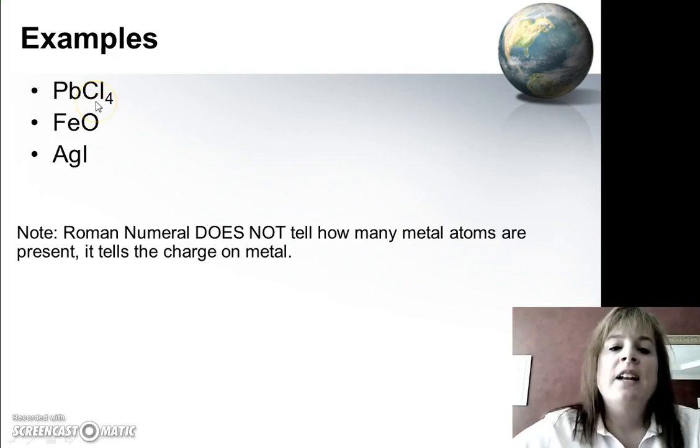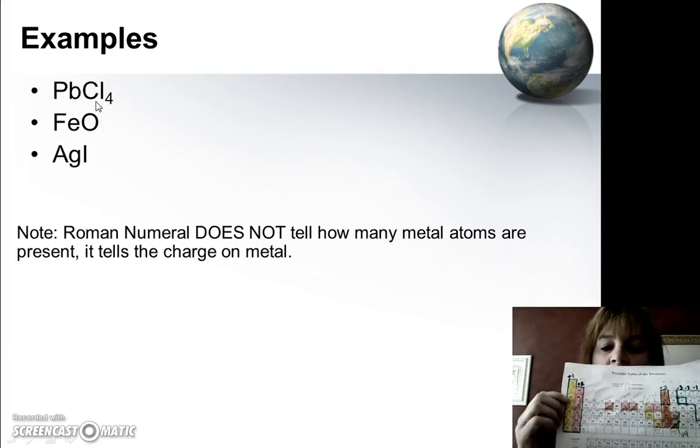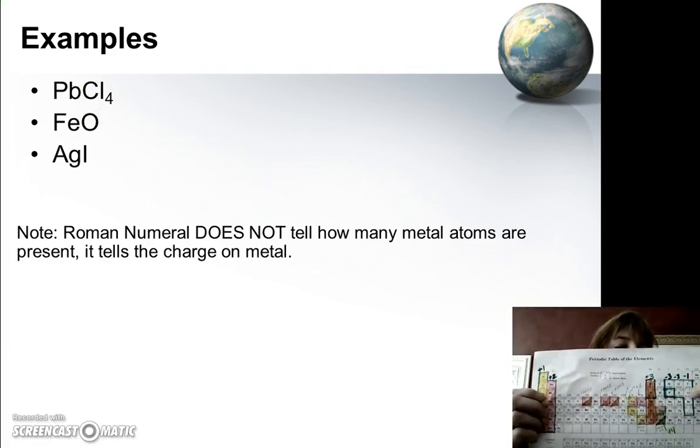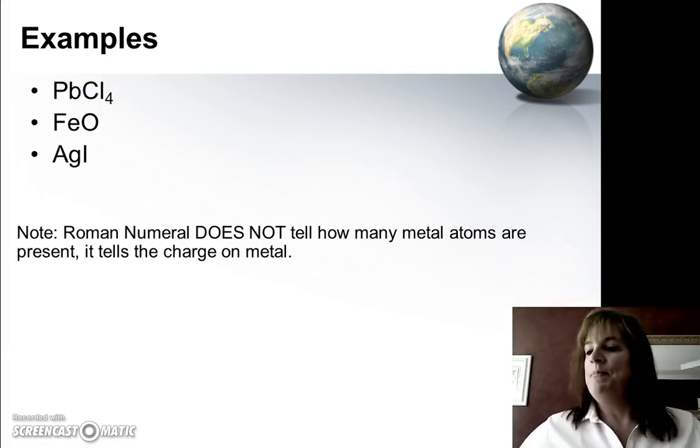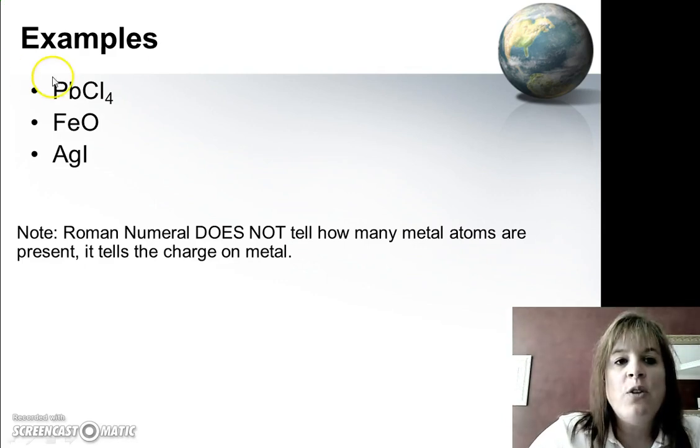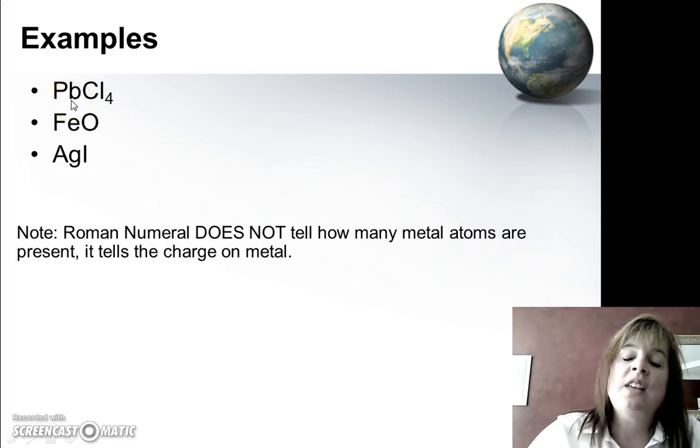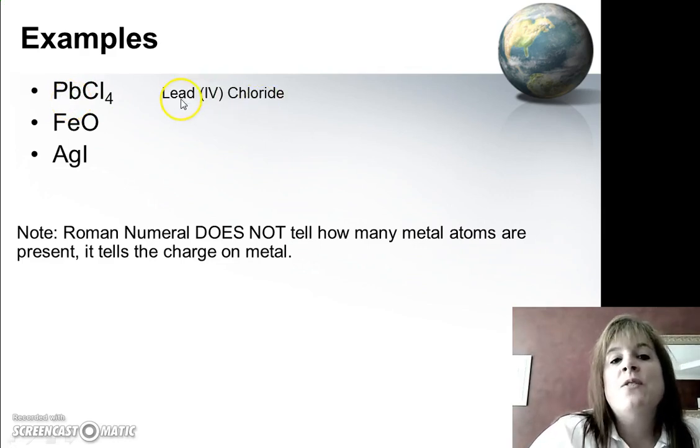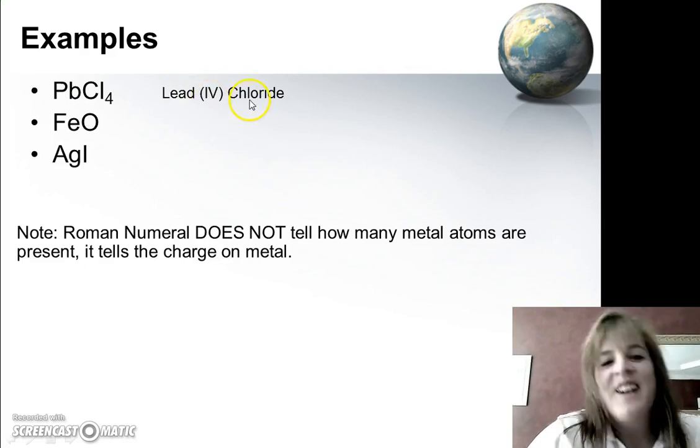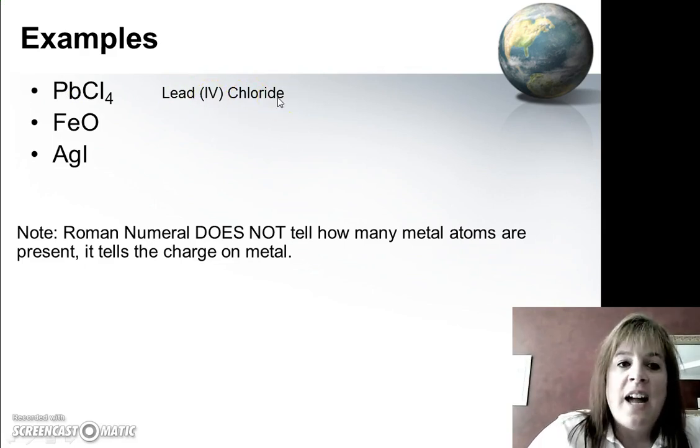Well, here's chlorine. And if we go to the periodic table and find chlorine, we'll find it that it's here in the negative 1 column. So if I have 4 chlorines at negative 1, this must be plus 4 because remember those charges have to add up to 0. So if you said lead 4, this is the Roman numeral 4, chloride, you're correct.